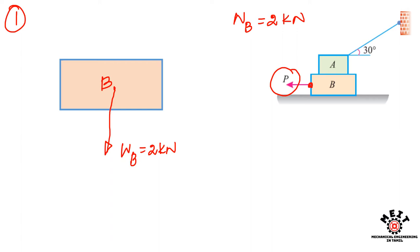For block B, the applied force P acts horizontally to the right. Then we check for contacts. The bottom contact is the floor, and the top contact is block A. If there is any contact, there will be a reaction force.